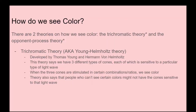Color vision is a very important aspect of vision. There are two theories on how we see color that you need to know. The first is the trichromatic theory, also called the Young-Helmholtz theory, developed by Thomas Young and Hermann von Helmholtz. This theory says we have three different types of cones, each sensitive to a particular type of light wave, and when the three cones are stimulated in certain combinations or ratios, we see color. This theory also explains that people who are colorblind might not have the cones sensitive to that light wave, or simply have fewer of them.